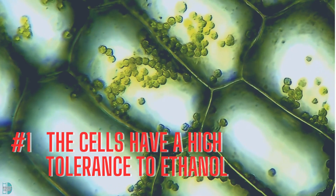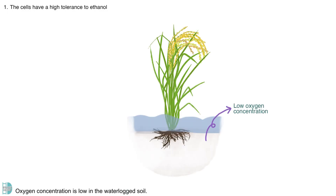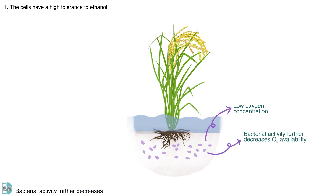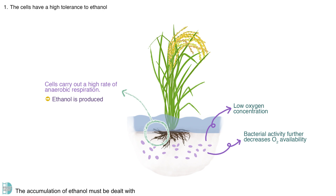Adaptation 1: The cells have a high tolerance to ethanol. Oxygen concentration is low in the waterlogged soil, and bacterial activity further decreases the availability of oxygen in the soil. So, the cells in the rice plants carry out a high rate of anaerobic respiration. As a result, ethanol is produced, and its accumulation must be dealt with as it is toxic to plant cells.